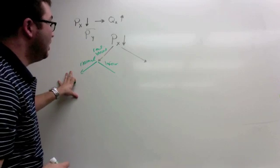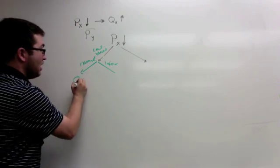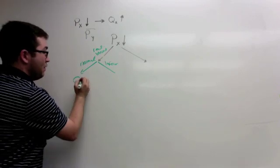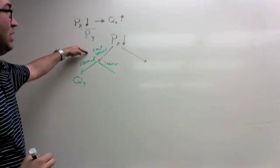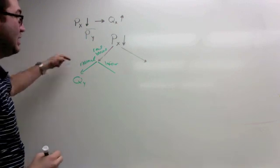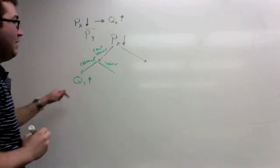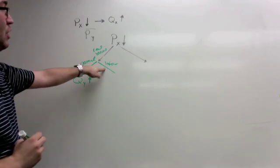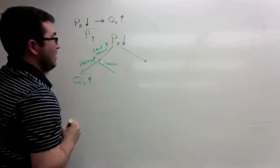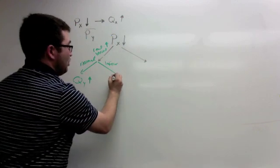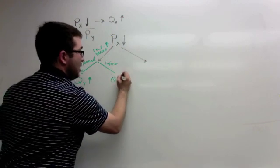If good y is a normal good, because our real income has increased, we'll actually want more of it. If it's an inferior good, because our real income has gone up since the price of x has gone down, we would actually consume less of good y.